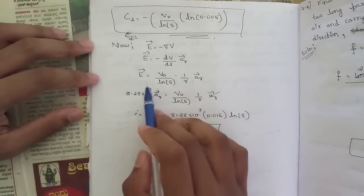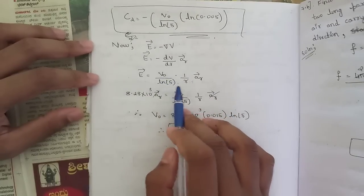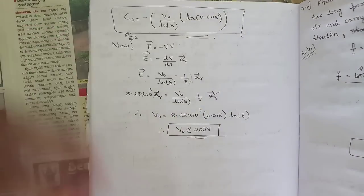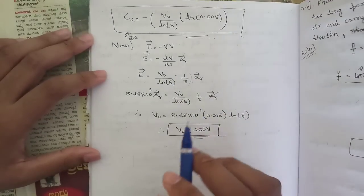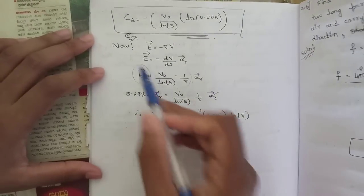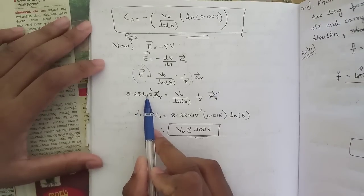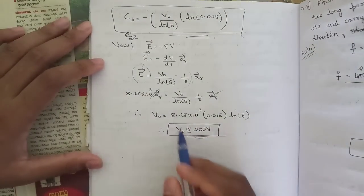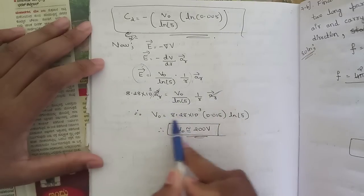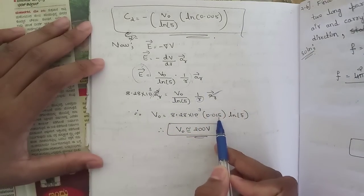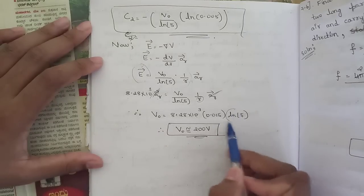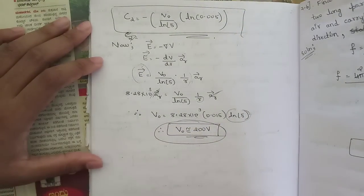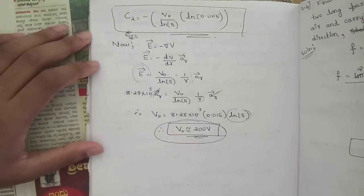So E = -(V₀ / ln 5) × (1/r) aᵣ. Substituting the given value: 8.28 × 10⁻³ aᵣ = (V₀ / ln 5) × (1/r) aᵣ. Cancelling aᵣ from both sides and substituting r = 0.015 m: V₀ = 8.28 × 10⁻³ × 0.015 × ln(5) ≈ 200 V. Pause and note down this solution.